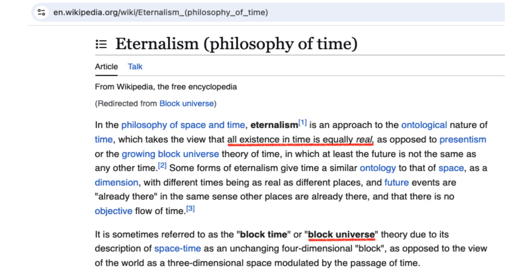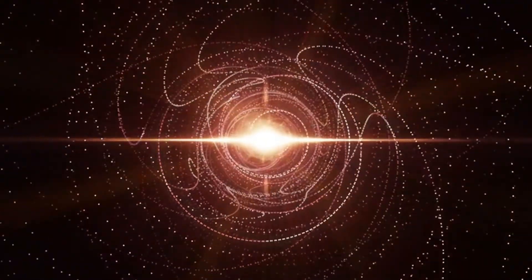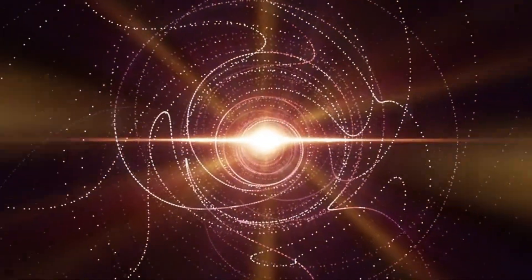This has profound implications for causality and free will. If the photon's viewpoint represents a more fundamental layer of reality, then perhaps our perception of flowing time and unfolding events is an artifact of our naturally slower-than-light existence. We are creatures of limited velocity, forever peering into a cosmos we can only partially comprehend.